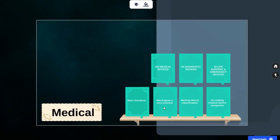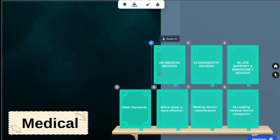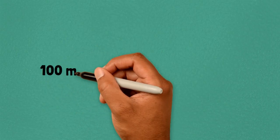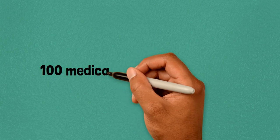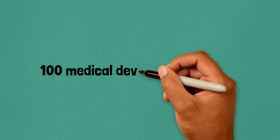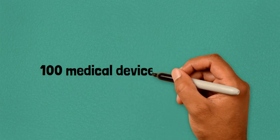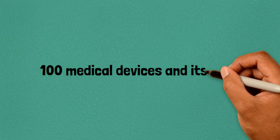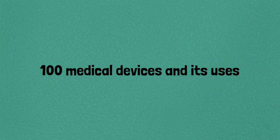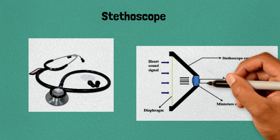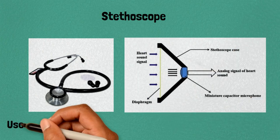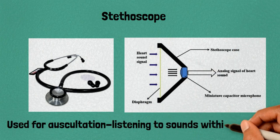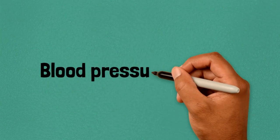Welcome to Design Engineers. The awareness of medical devices and their uses is an increasingly important element of a healthcare organization. Here are 100 important medical devices and their uses. One: stethoscope, used for auscultation. Two: blood pressure monitor,